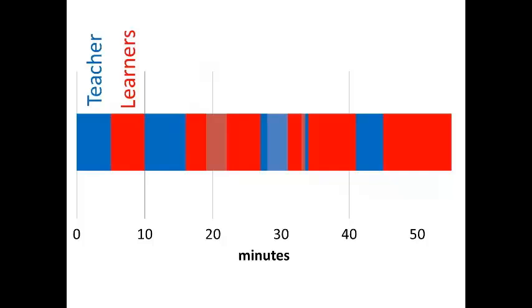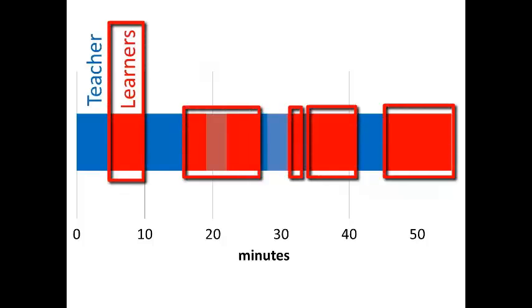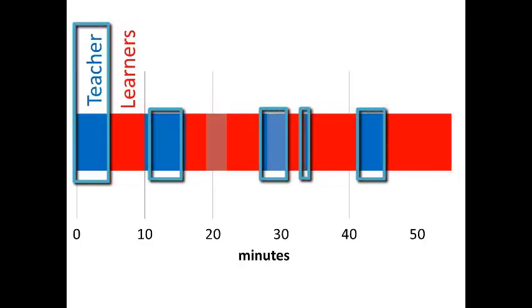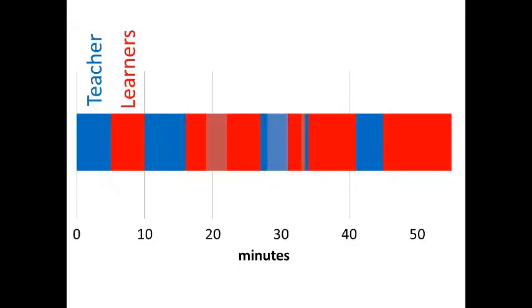This is a time graph of the 55 minute lesson, again with red referring to learner activity and blue teacher focus. Notice that Mr. Potsane uses his time effectively by varying the activity type and getting the learners to answer as many questions themselves as possible.